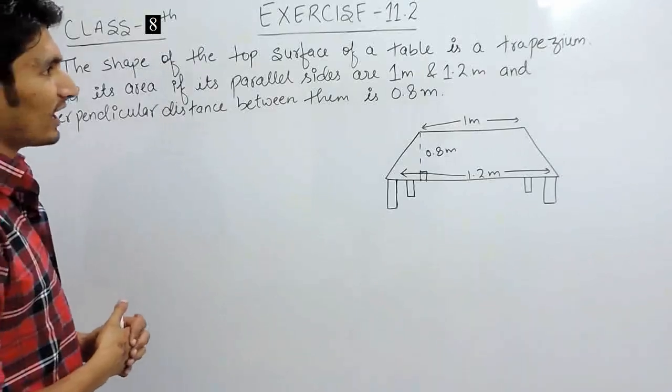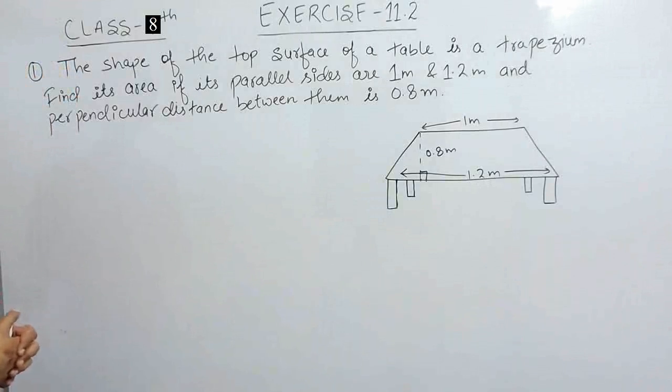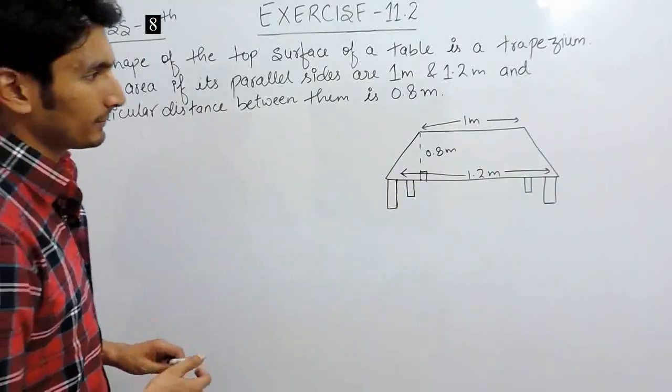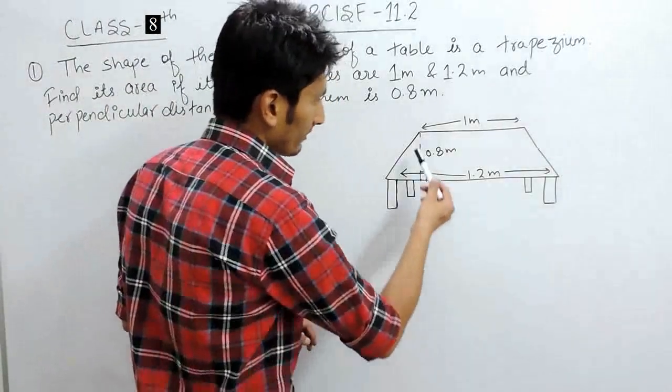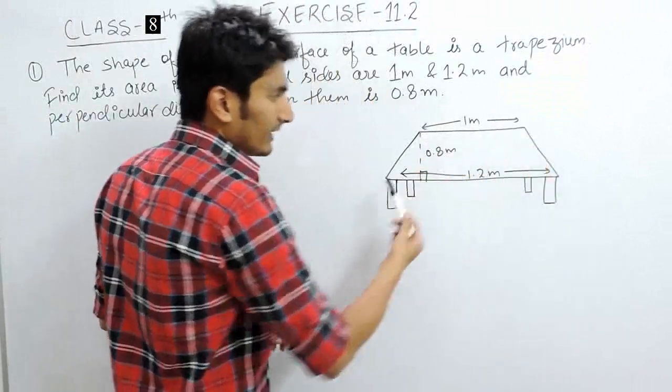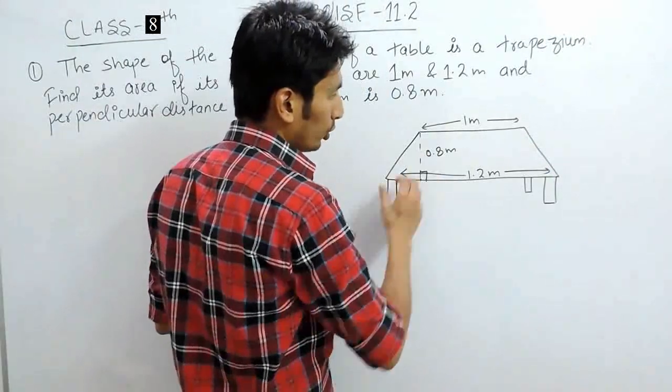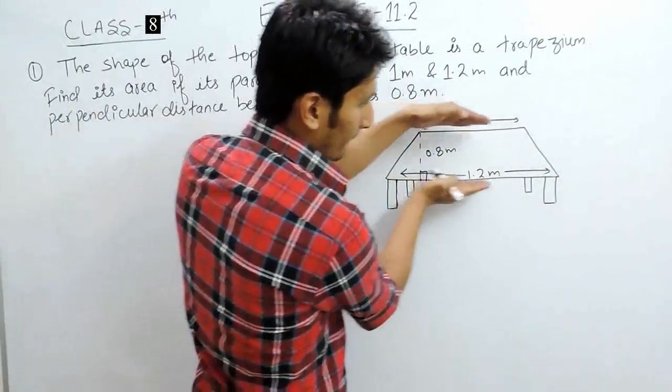If its parallel sides are 1 meter and 1.2 meters and the perpendicular distance between them is 0.8 meters, this means this is a table where the upper surface is in a form of a trapezium. We know that trapezium is a quadrilateral whose any two sides are parallel.